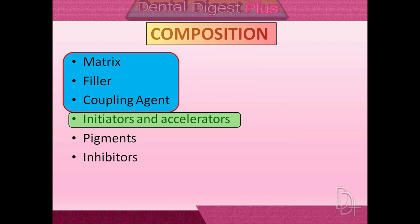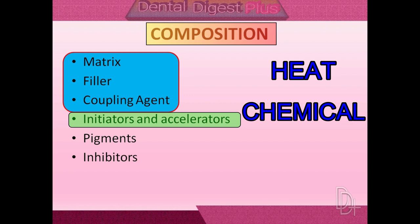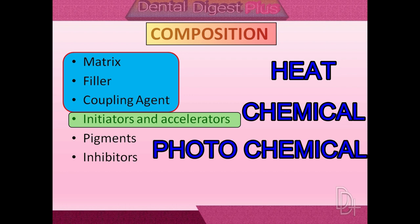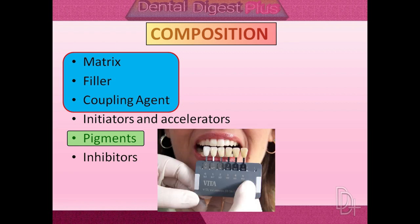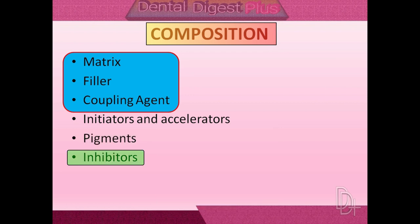Activation systems include heat, chemical, and photochemical initiated polymerization. Pigments are added in composite which help to match the color of tooth structure. Ultraviolet absorbers and other additives are added to improve color stability. Polymerization inhibitors extend storage life and provide increased working time for chemically activated resins.